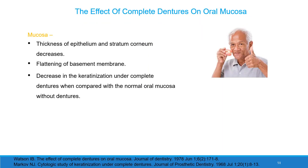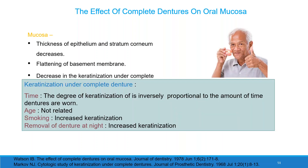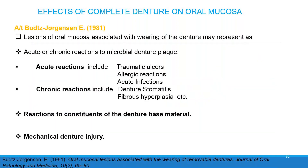Effect of complete denture on oral mucosa. The thickness of the epithelium and stratum corneum decreases. Flattening of the basement membrane occurs. Keratinization decreases under complete dentures compared with normal mucosa. The degree of keratinization is inversely proportional to the amount of time dentures are worn. It is not related to age. Smoking increases keratinization, and removal of the denture at night also increases keratinization.